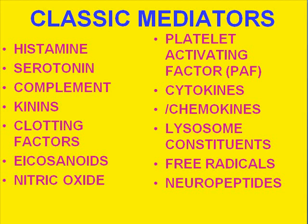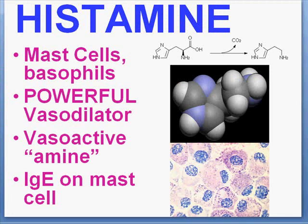Histamine has always been at the top of the list classically. It is one of the most powerful natural vasodilators in the body. Its main production is in mast cells — it is a vasoactive amine. Here is its chemical formula, and here are some granules inside mast cells, which classically contain histamine and heparin. Serotonin is debatable in mast cells — probably present in rats but probably not in humans.